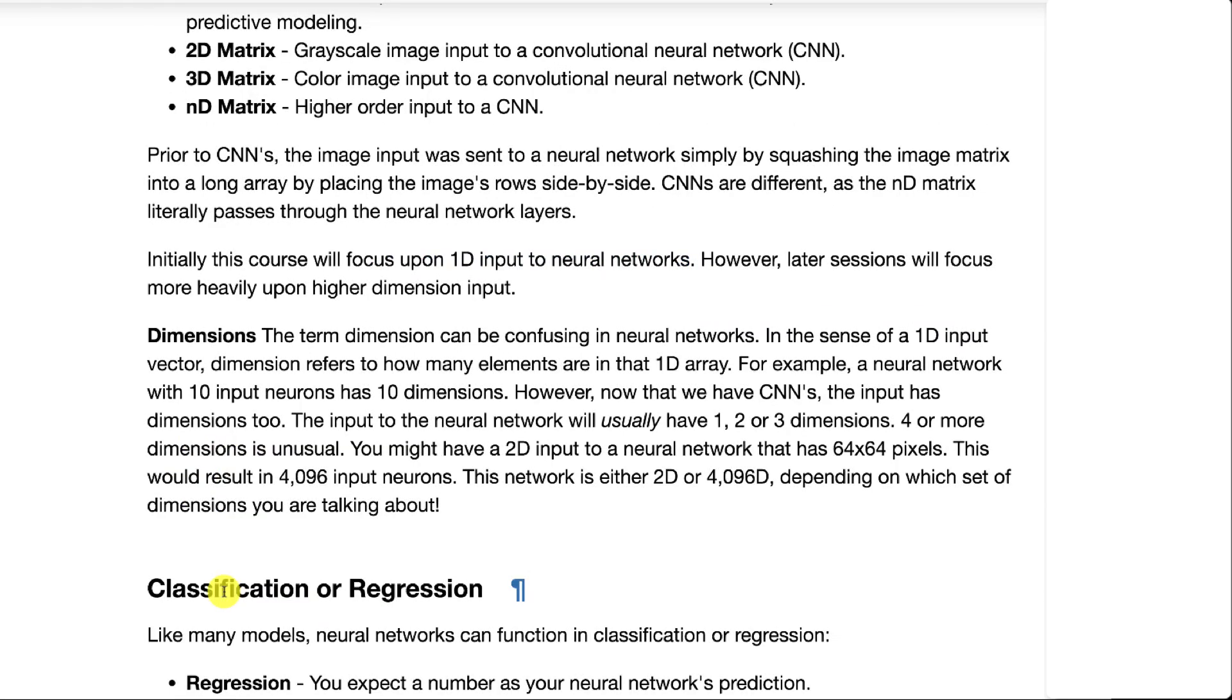Dimensions can be used in several different ways with neural networks. When you talk about the dimensionality of the neural network, usually you're talking about what the input vector or input matrix looks like. How many input neurons do you have and how are they arranged? Are they a grid? Are they a box?